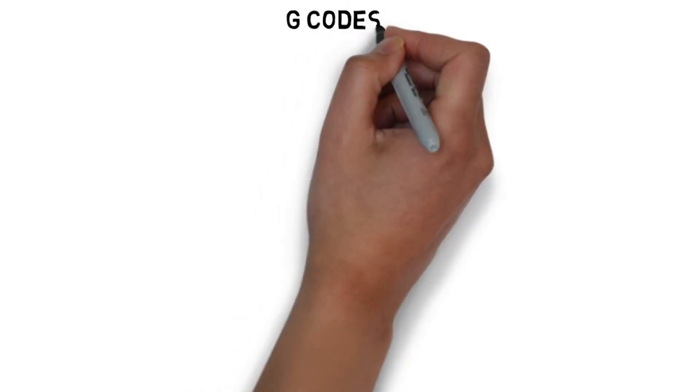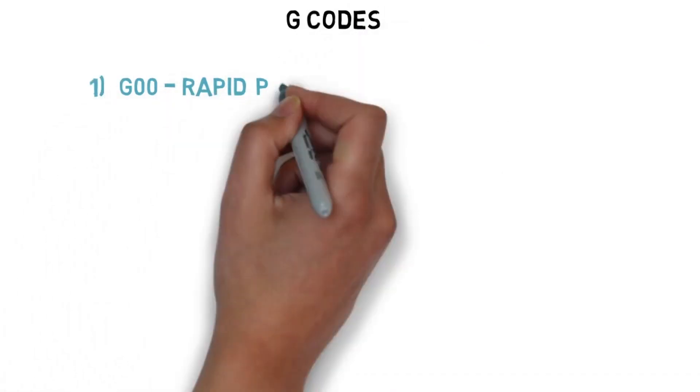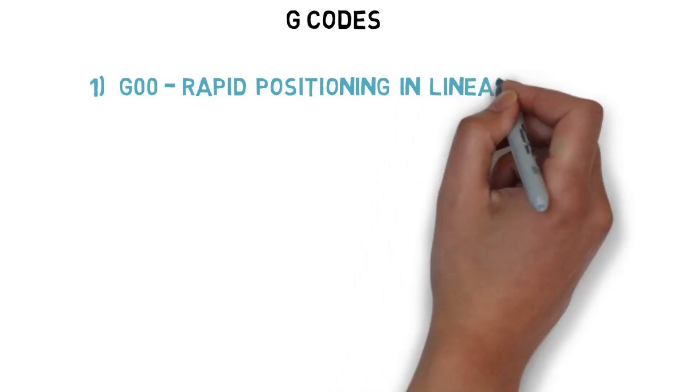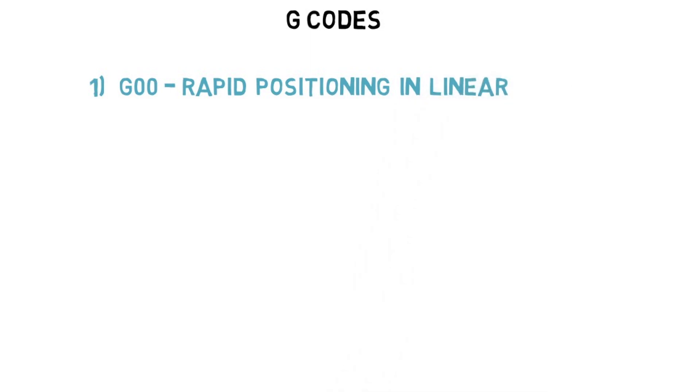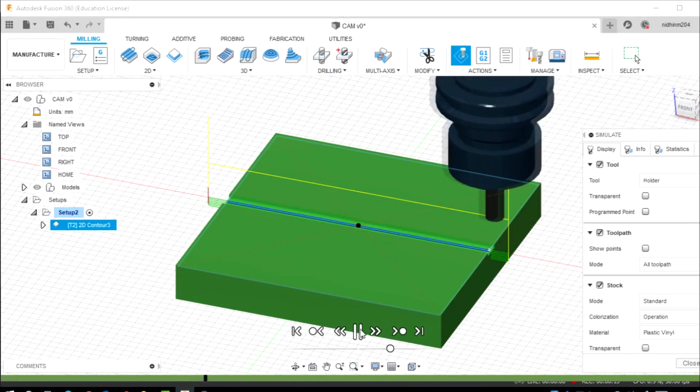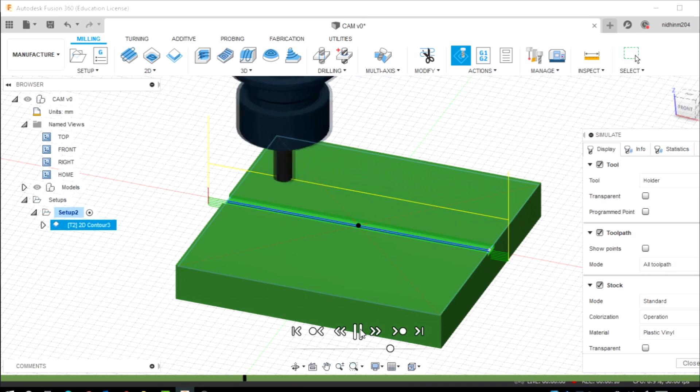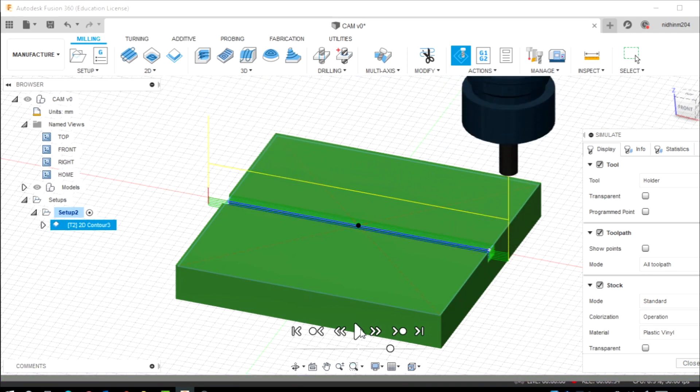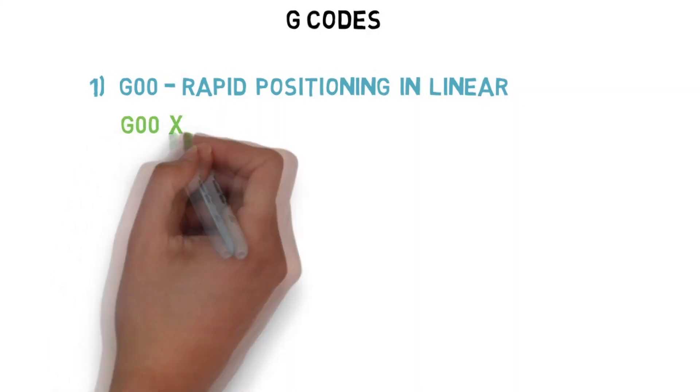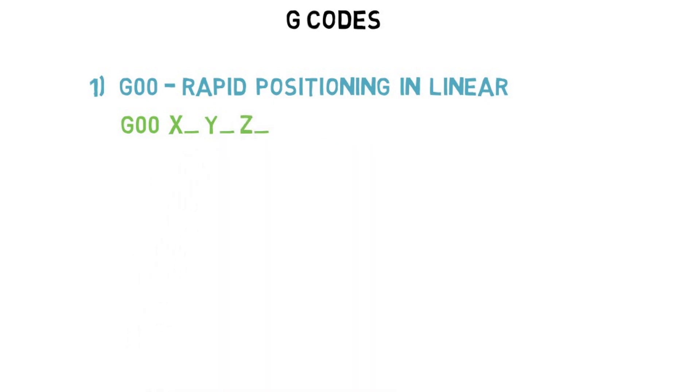Number one, G00. G00 is used for rapid positioning. This function will produce fast movement to the specified XYZ position. Rapid movements are used for non-cutting moves where tool and workpiece are not in contact. The format is G00 XYZ coordinates.